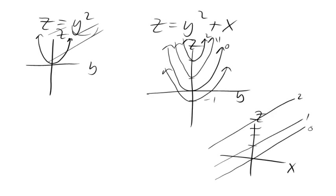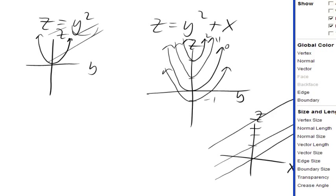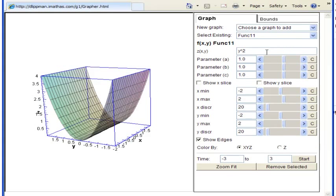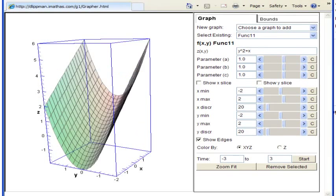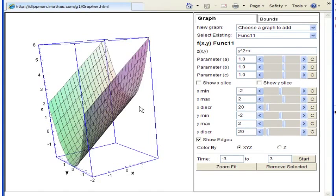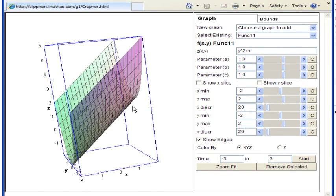So you can sort of kind of imagine if we were to combine those together, what we are going to get with y squared plus x is a same sort of parabolic cylinder shape, but instead of extending directly horizontal in the x, it is going to extend, it's gonna be shifted up in the z direction as x increases.